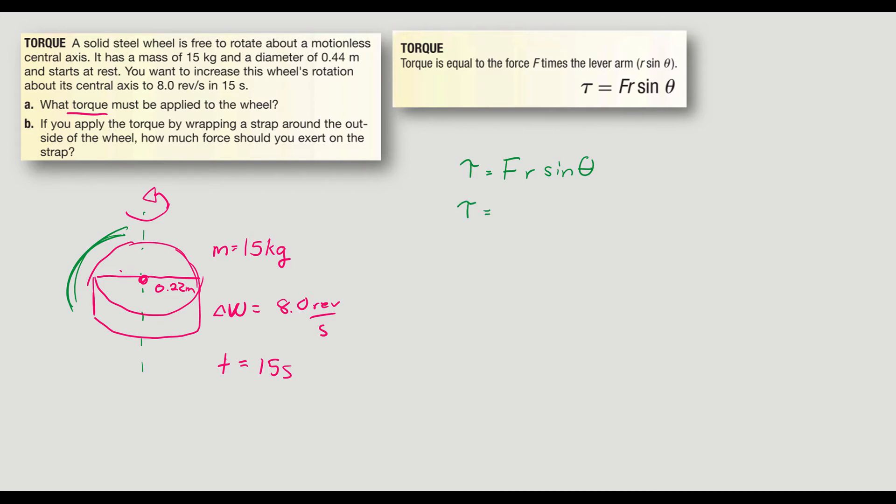So maybe not that one. What about torque? It's also equal to angular acceleration times moment of inertia. Maybe I can do something there. I think I can find angular acceleration. Because right here I have velocity and I have time. So I can find angular acceleration because that's change in angular velocity divided by change in time. Time is easy. That's 15 seconds.